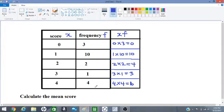Let's now find the sum of the frequencies by adding up this column. So we add up the numbers in this column. Sometimes this is referred to as sigma f. Sigma meaning the sum of. 3 plus 10 plus 2 plus 1 plus 4 will give 20.